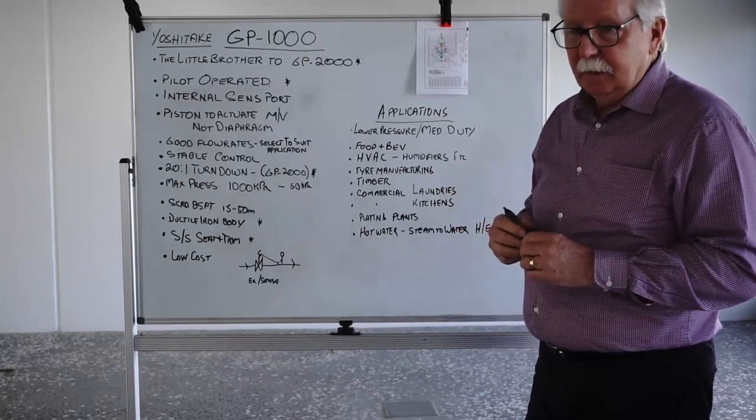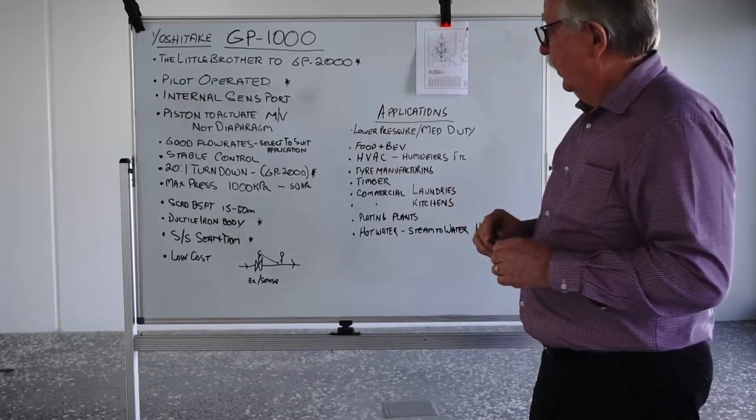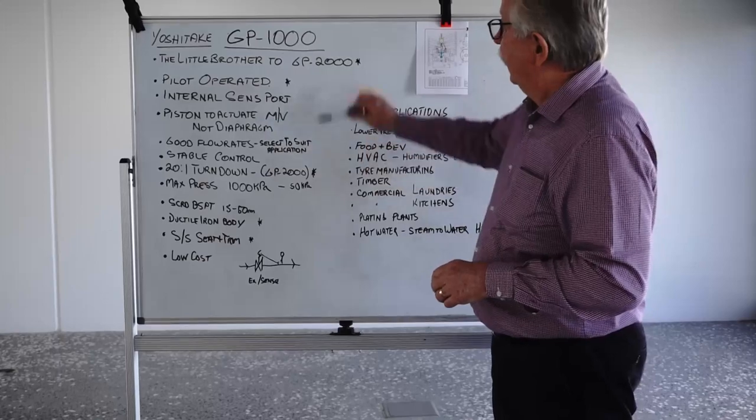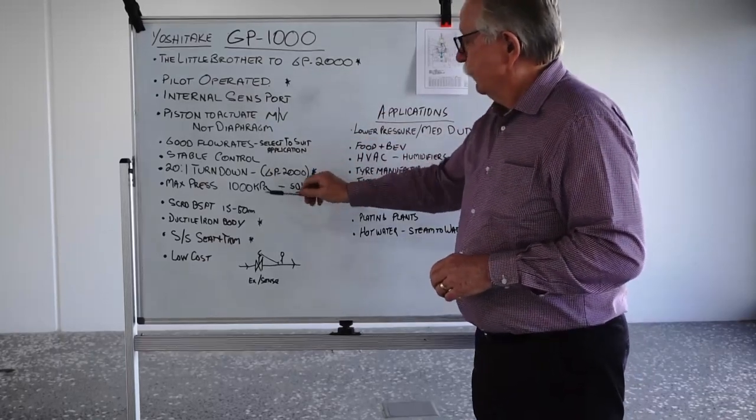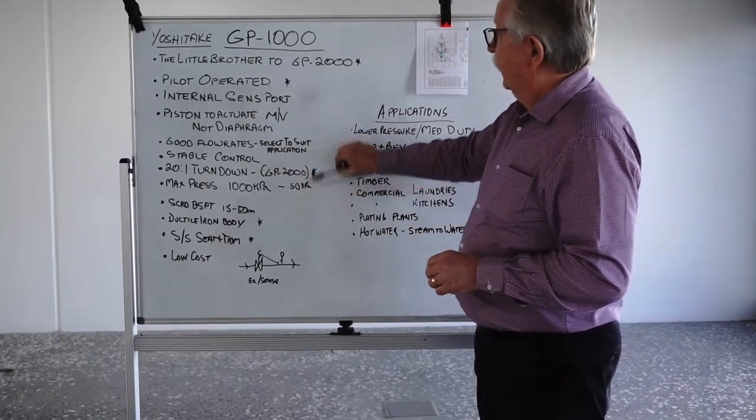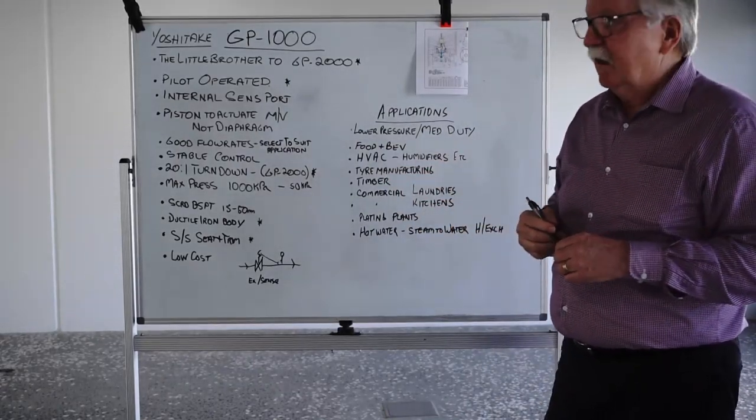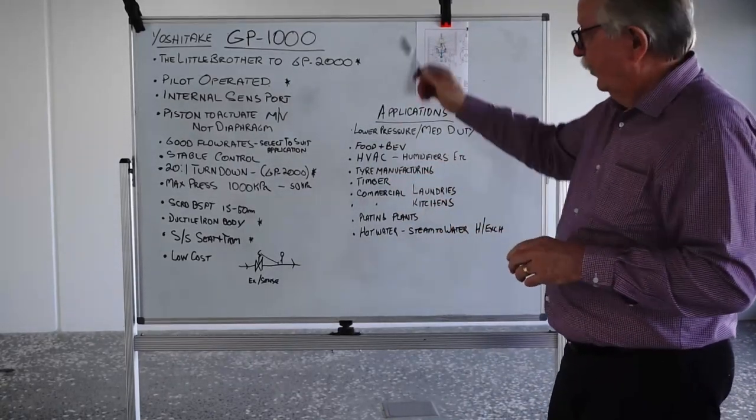They are available in flange versions but they're available on request. We're happy to get them for you if necessary. But in most cases, if you need a flange one, the GP2000 would be your best choice and easier, and they're all in stock as well.